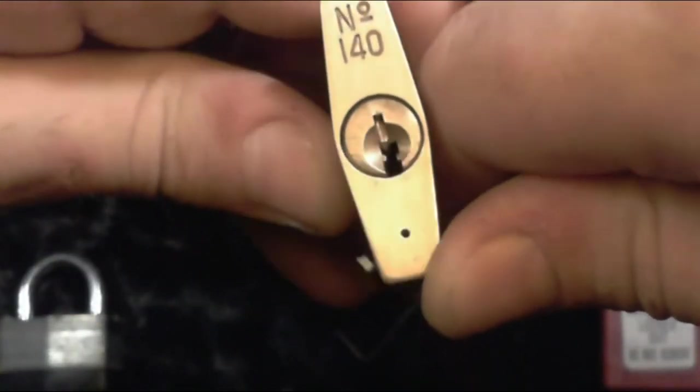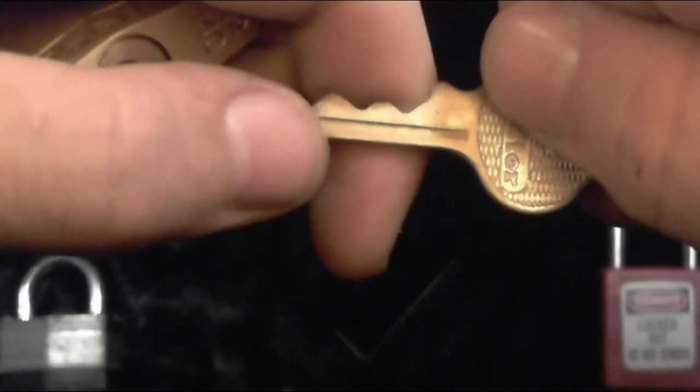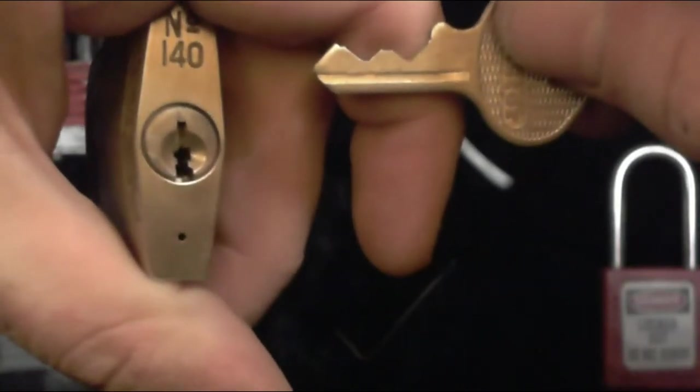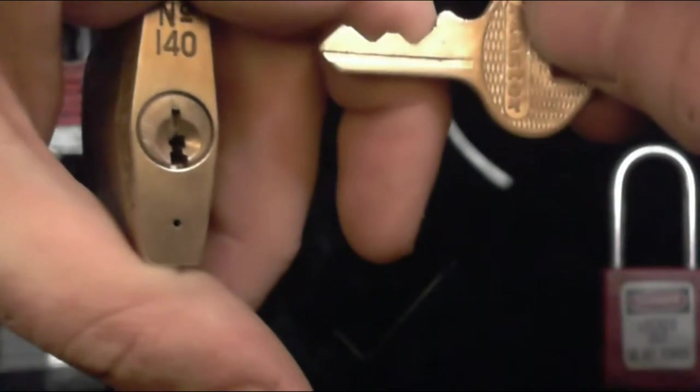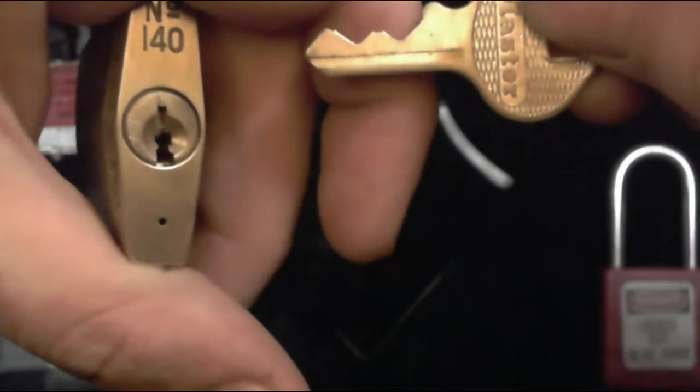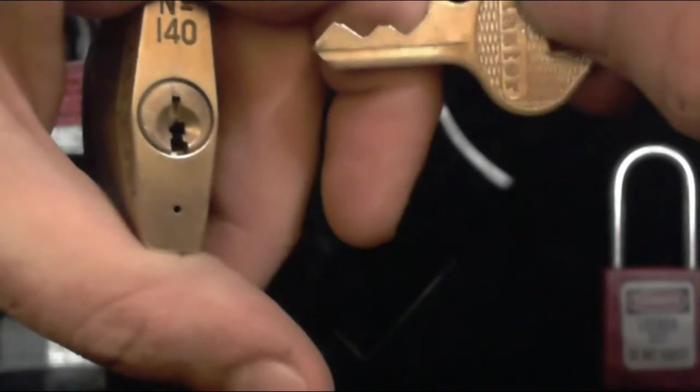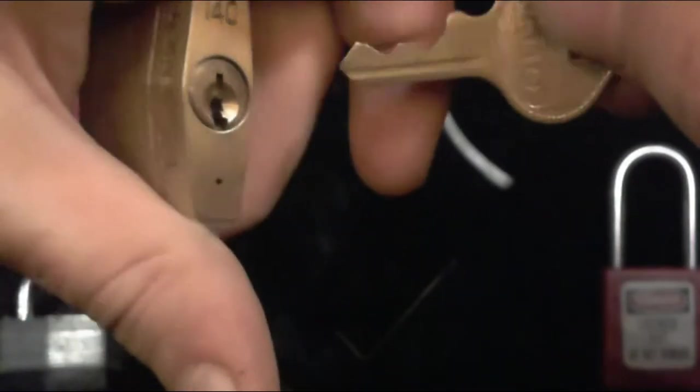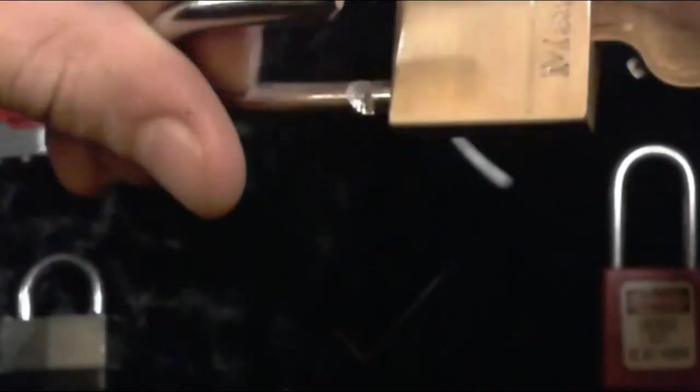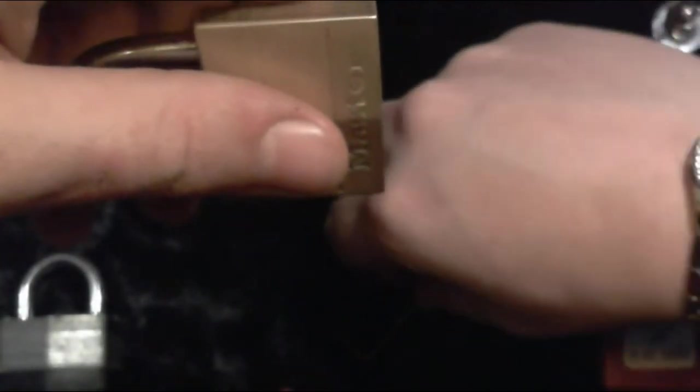This is a Master 140 with probably the most radical bidding on YouTube. I've seen a few other folks pick these locks but I haven't seen one that has this radical bidding. This is the key - the bidding looks like an 8-4-8-4 or something like that, it's really extreme. The lock does work and we're going to try to manipulate this lock open.